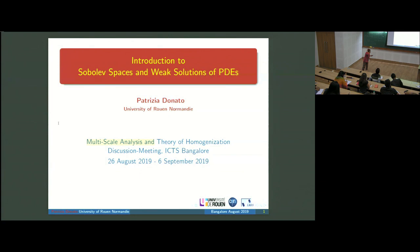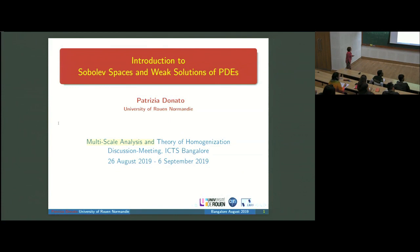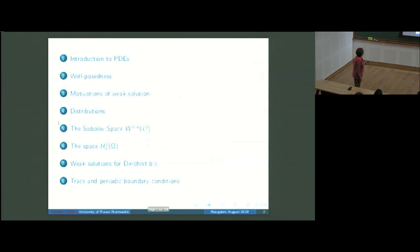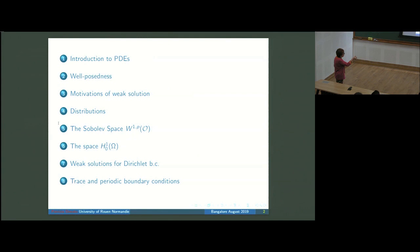In this talk I want to introduce weak solutions and explain why. The aim is homogenizing the audience. I will first give an introduction, explain what well-posedness means, motivations, and then talk more technically about distributions, Sobolev spaces, weak solutions, and periodic boundary conditions, which is very important as Professor Nanda Kumaran said for homogenization.